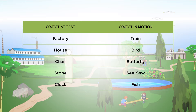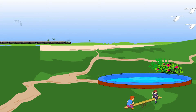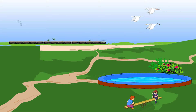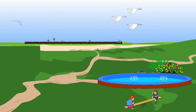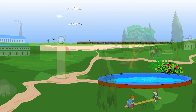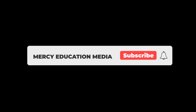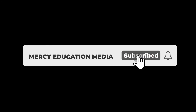How did we classify objects at rest and in motion? If the position of the object changes with time, it is classified as objects in motion. Whereas, if the position does not change, it is classified as objects at rest.